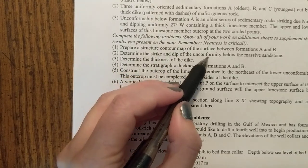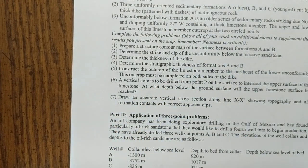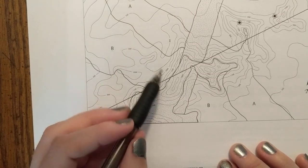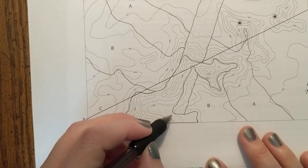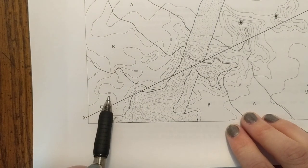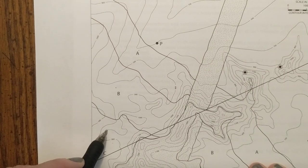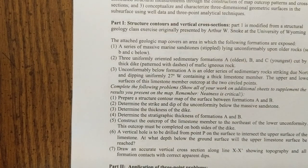The next problem is to determine the strike and dip of the unconformity below the massive sandstone. On a fresh map, you do another three-point problem — find a high elevation, a low elevation, and an intermediate point within that unit. Follow the same steps to determine distance, angles, and where B intersects to find the unconformity's dip. Note that formations A, B, and C are all uniform, so the dip found in one applies to all three.